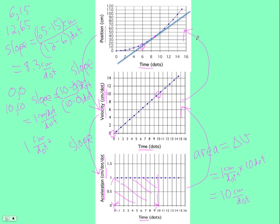If we go from velocity to position, it is also the area. So let's draw a line at t equals 10. And now we have the area of a triangle. So you should know that is one half the base, and the base is 10 dots times the height, which is 10 centimeters per dot.